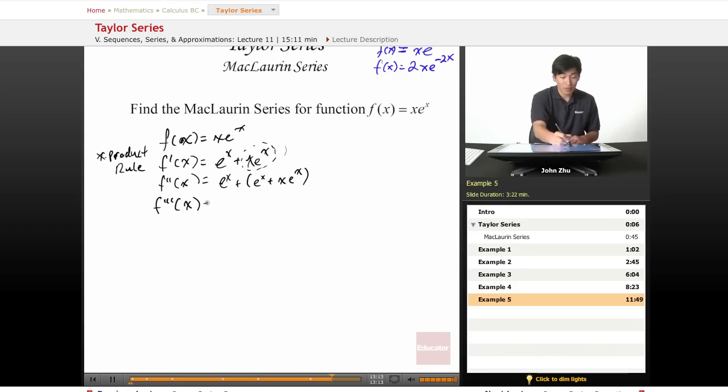And f three prime of x equals - well, same thing again. So plus e to the x, plus e to the x, plus derivative of x e to the x, which equals e to the x plus x e to the x. So e to the x plus x e to the x.